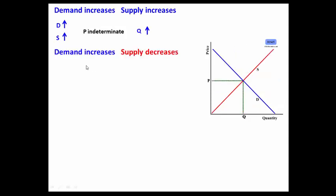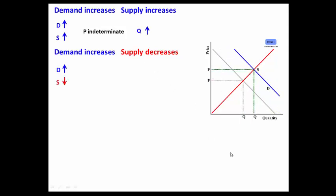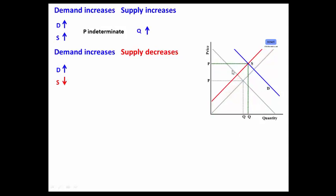Let's look and see if demand increases and supply decreases. If demand increases, notice that price goes up and quantity goes up. But as supply decreases, watch what happens to the price — the price continues to go up. You can see that price continues to go up.